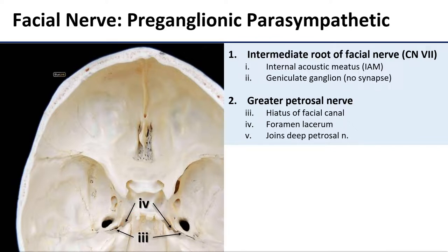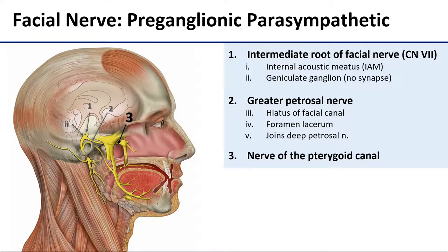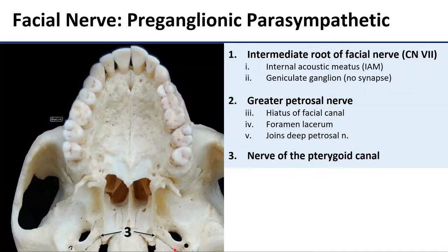It's going to join up shortly after that with the deep petrosal nerve, which is carrying postganglionic sympathetics from the superior cervical ganglion, and together those are going to dive into the pterygoid canal where they become the nerve of the pterygoid canal. Here is the opening of the pterygoid canal, this teeny little hole here at the bottom of your screen. The nerve of the pterygoid canal is going to enter in there, and it's going to travel anteriorly through the sphenoid.